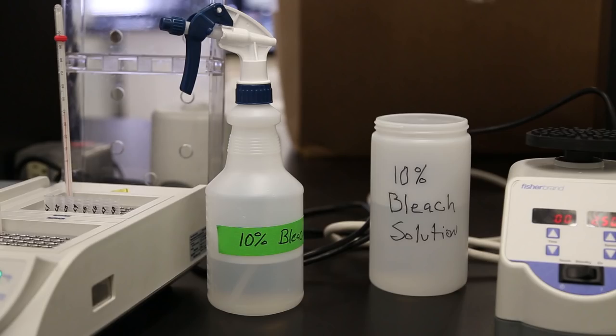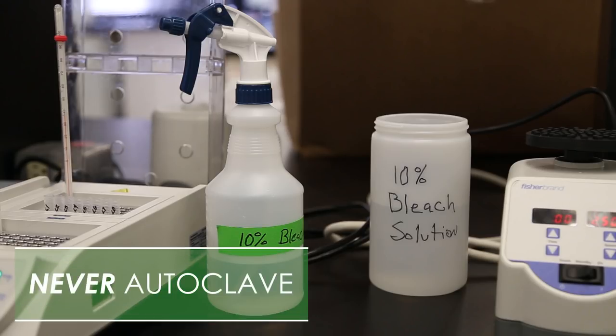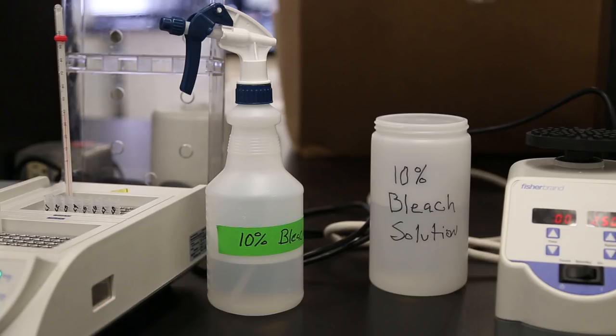Mix up a fresh container of 10% bleach solution daily. We recommend a sealable wide mouth container. The pipette tips and used reaction tubes and caps will go into this solution. A spray bottle with fresh 10% bleach solution is also recommended. We do not ever recommend autoclaving the pipette tips or the reaction tubes.